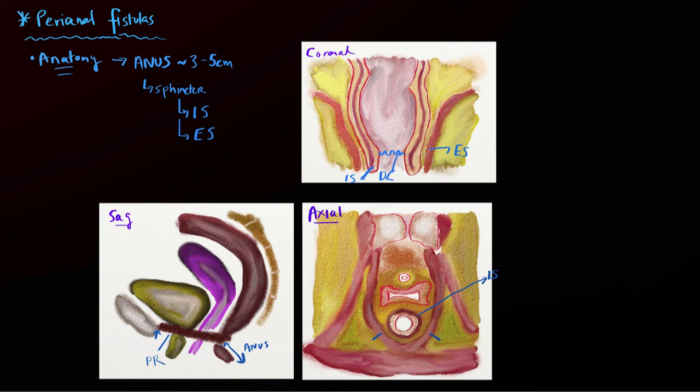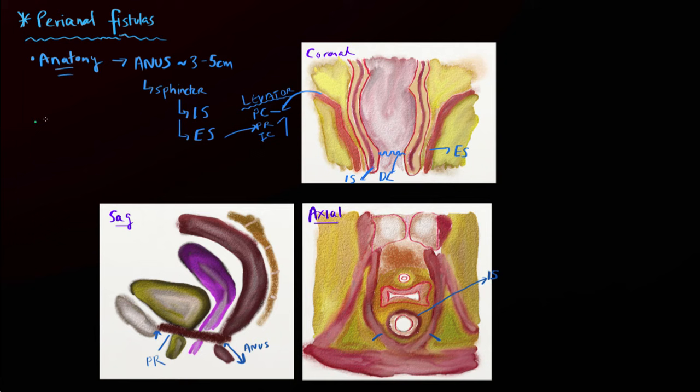The puborectalis muscle continues upwards and really forms the levator plate. The levator musculature is made up of the pubococcygeus muscle, the puborectalis muscle, and the iliococcygeus muscle — and sometimes it's very difficult to tell these apart. The external sphincter, which is a voluntary muscle, is contiguous with the puborectalis portion of the levator musculature.